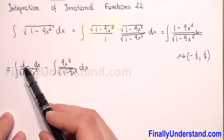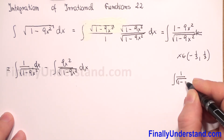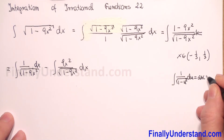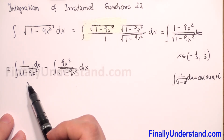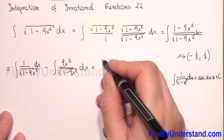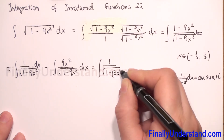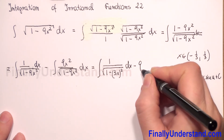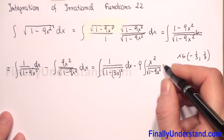Because we have 1-9x², we need to get the integral of 1 over √(1-u²) du, which equals arcsin(u) plus constant C. To get this expression, we rewrite our first integral as 1 over √(1-(3x)²) dx, minus 9 times the integral of x² over √(1-9x²) dx.